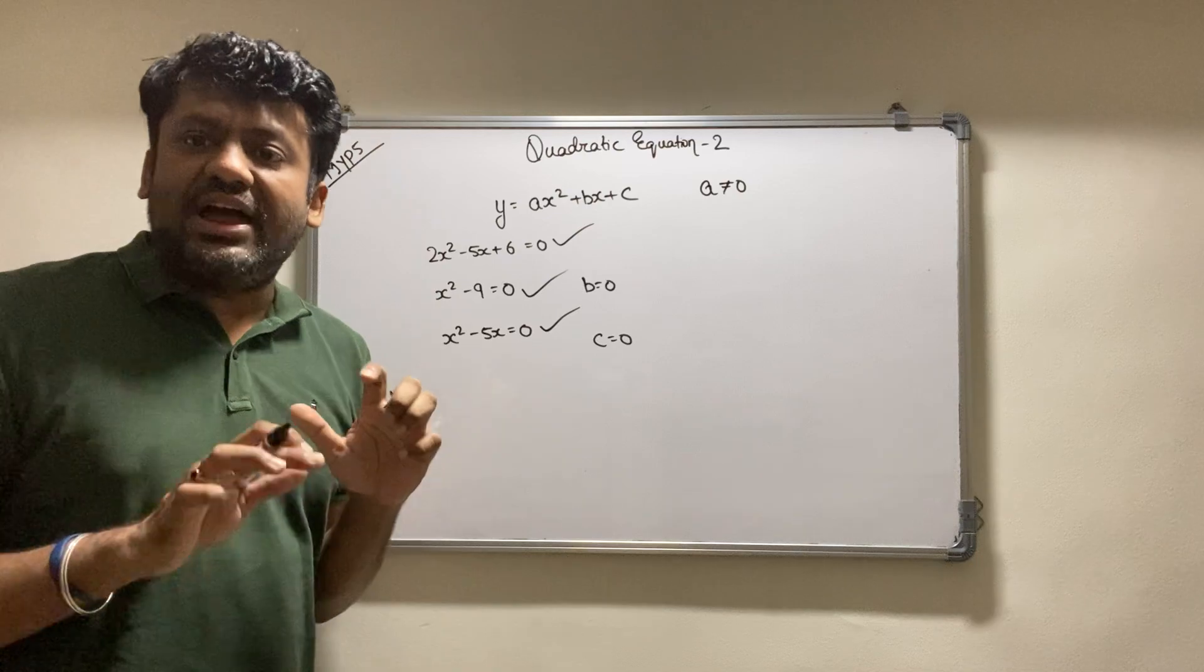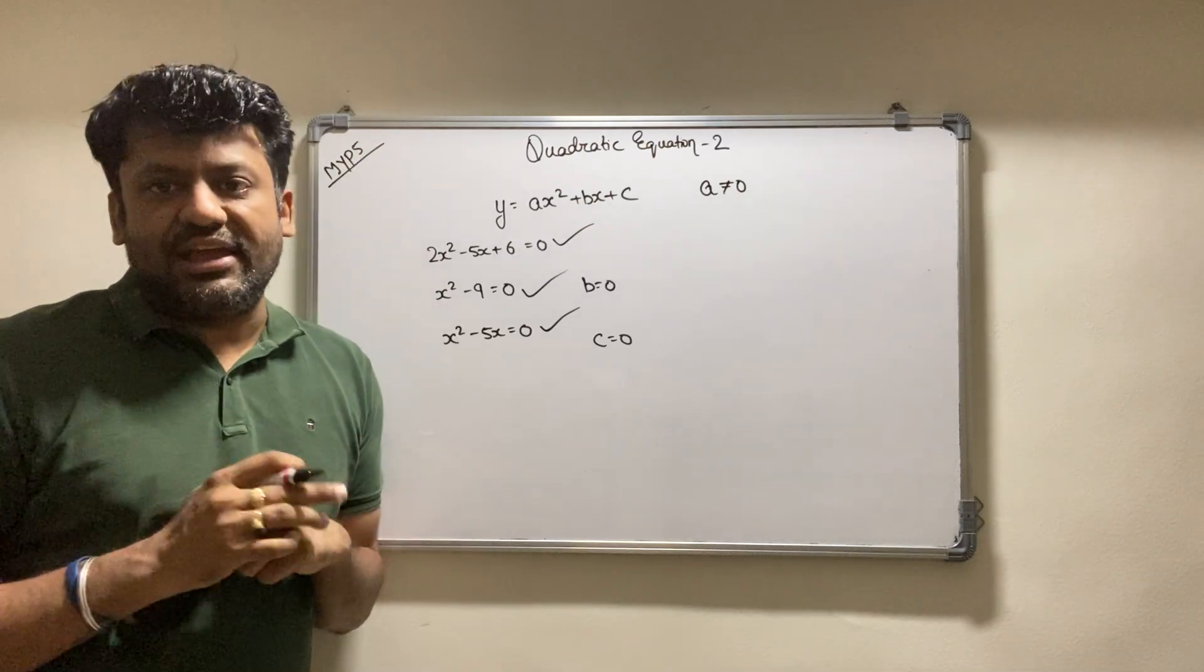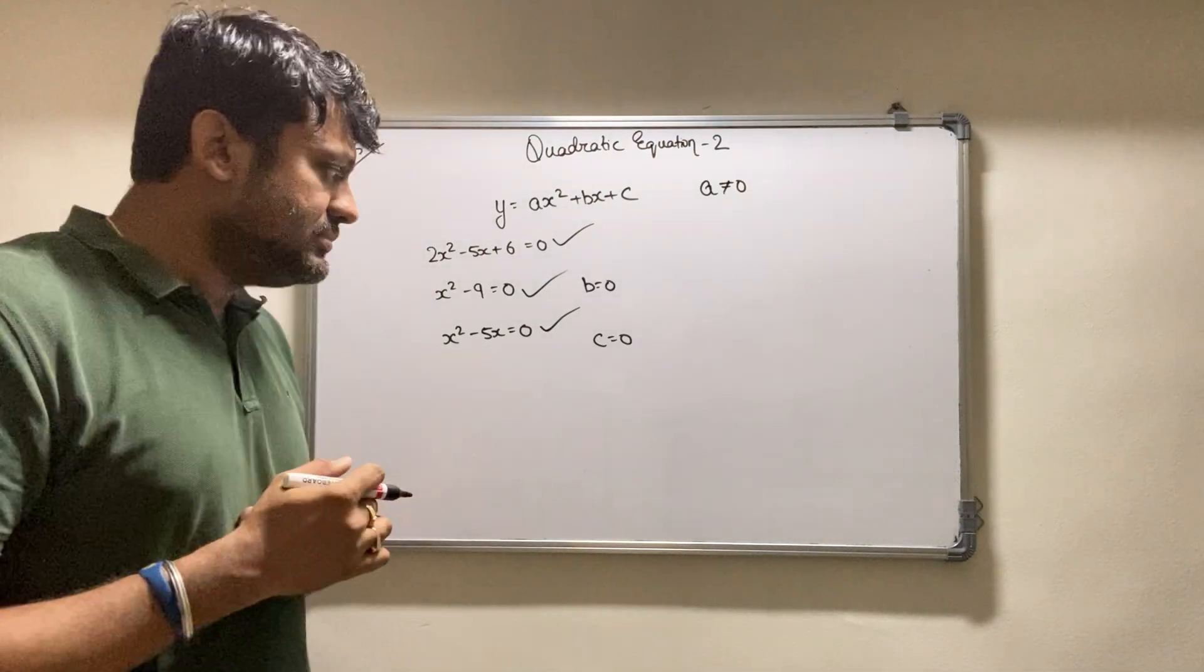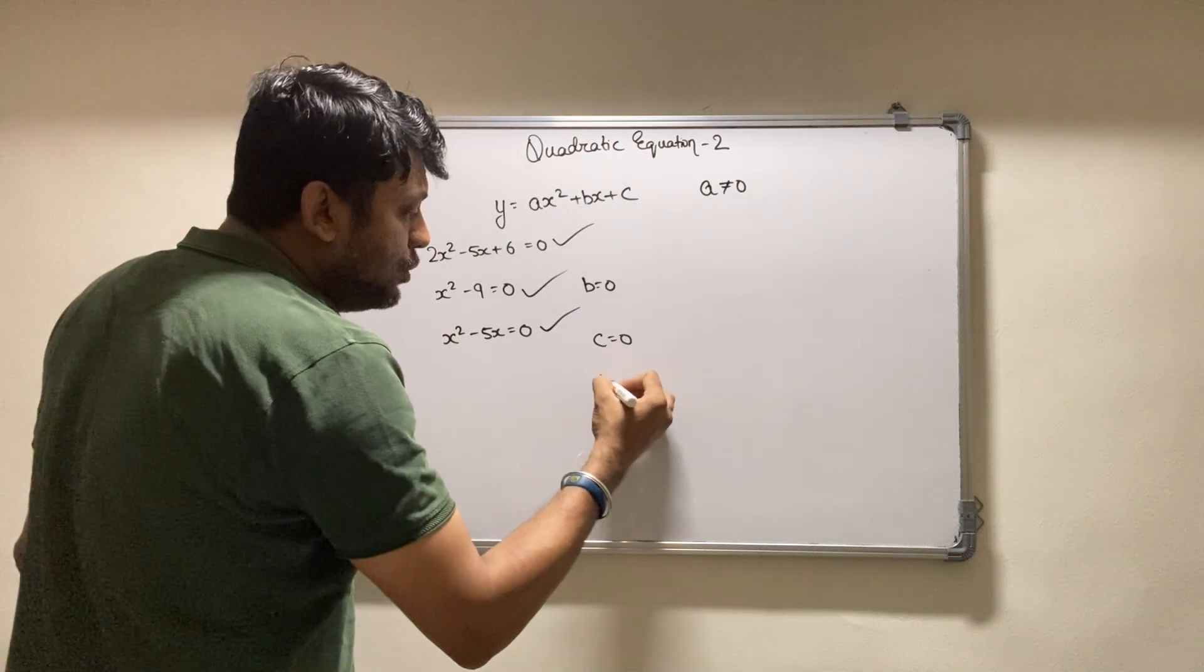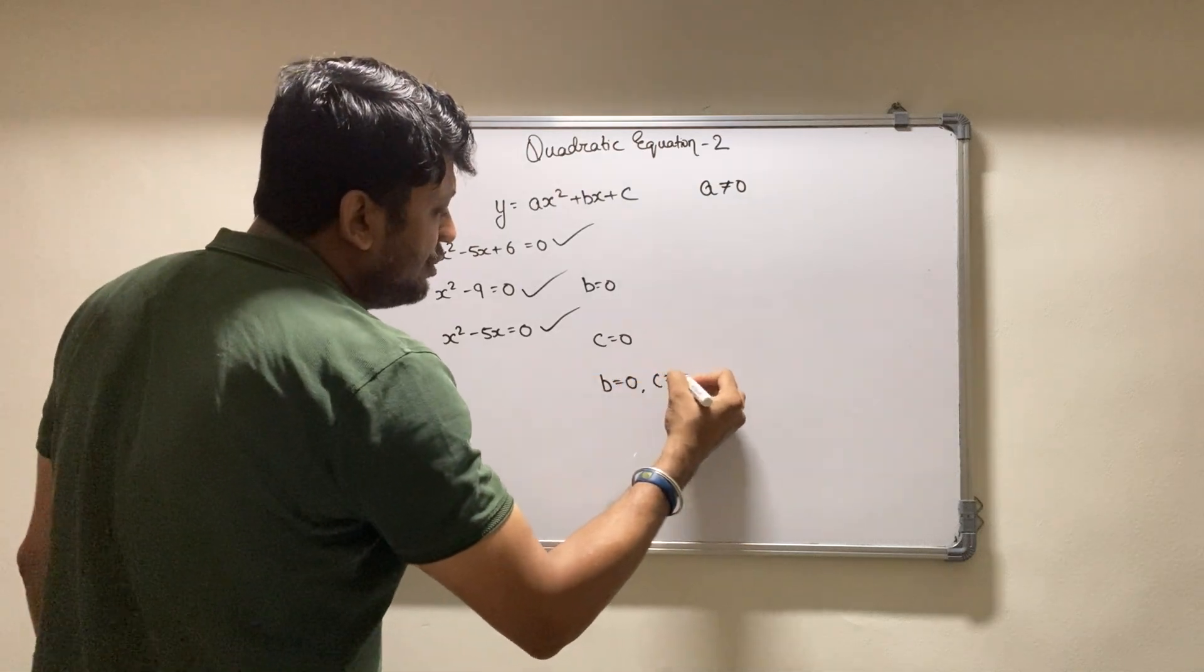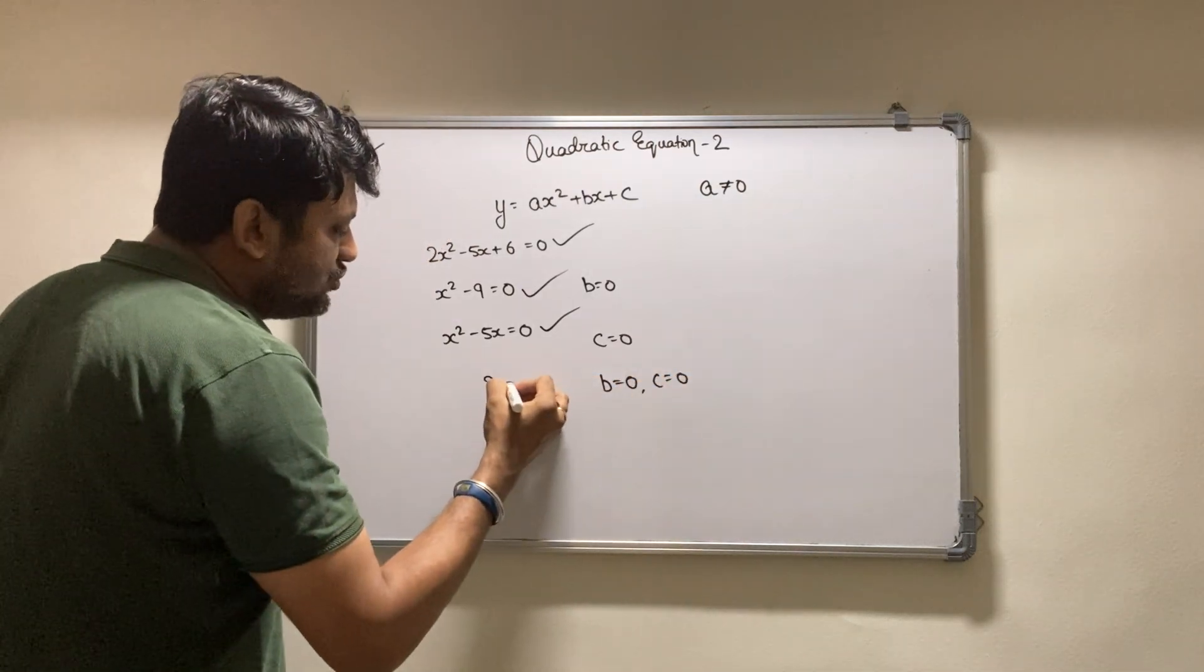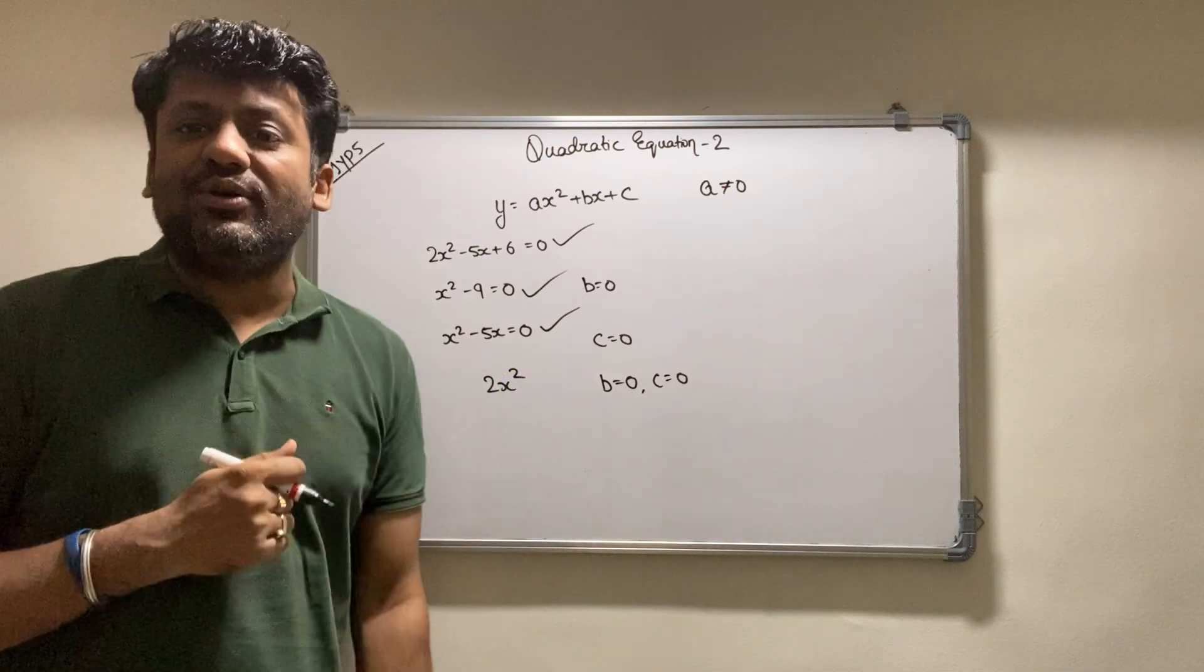What if b and c both are 0? If b is also 0 and c is also 0, example 2x squared, is this a quadratic equation?